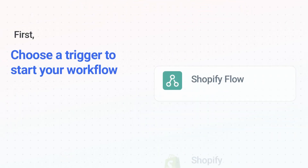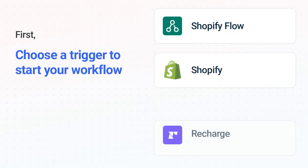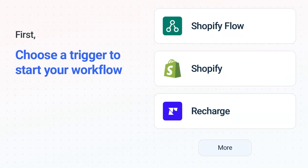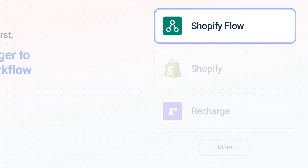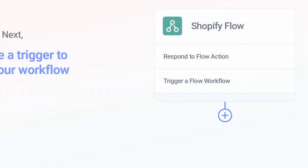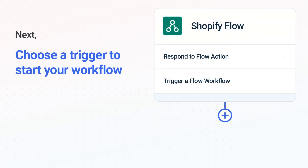It's easy to get started. First, choose your trigger app, Shopify Flow. Next, choose the trigger event from the list. This is what kicks off your workflow.